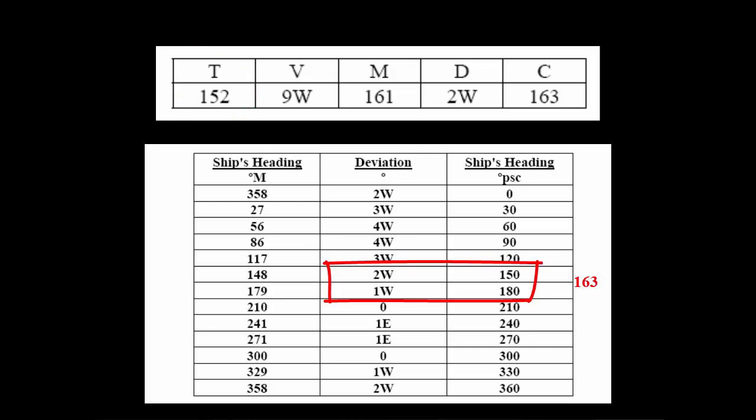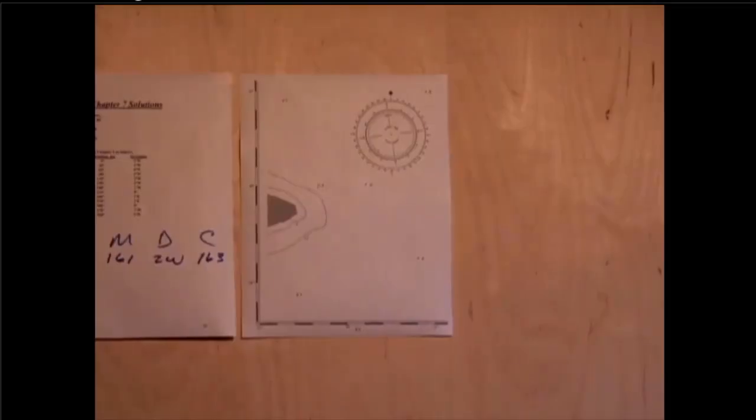As we've previously calculated for this chart, we have a variation of 9 degrees west. Again, right to left, we're subtracting west, so this becomes 152 true. Let's take this 152 and plot it from our starting point, point C.